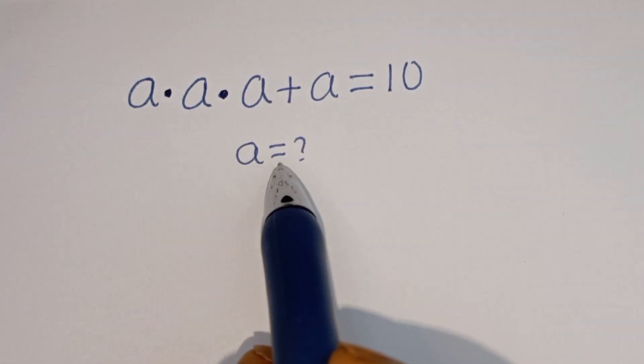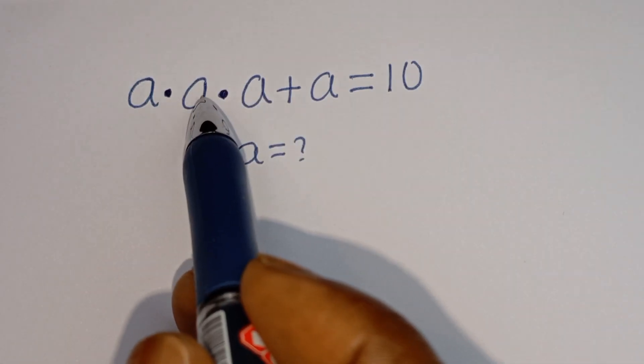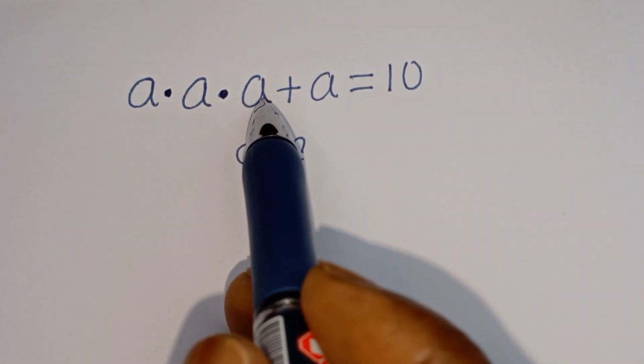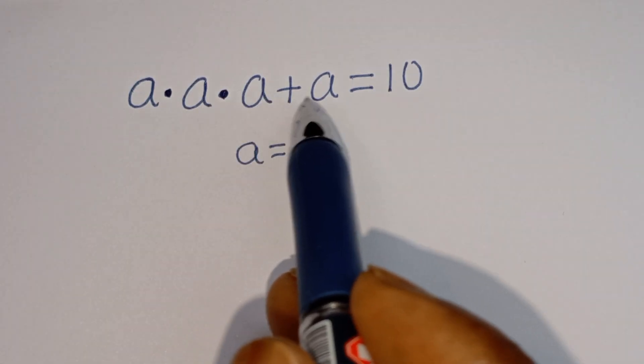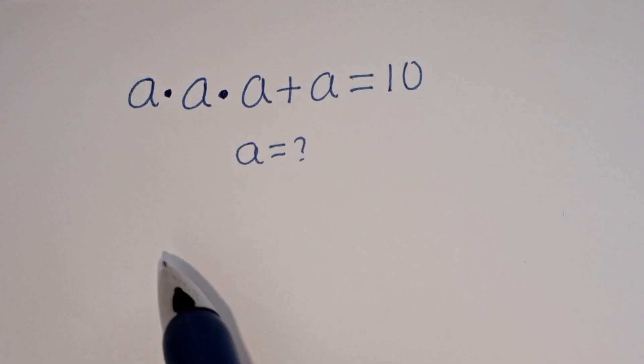Hello. How to solve for A in this equation: A multiplied by A multiplied by A plus A is equal to 10.